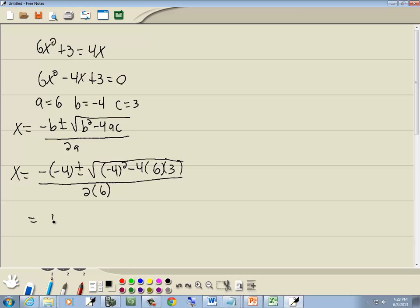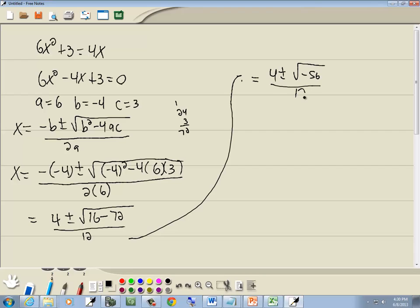Now negative negative gives me a positive 4. Plus or minus 4 squared, negative 4 squared is 16. Minus 4 times 6 is 24, times 3 gives us negative 72. And 2 times 6 gives us 12. So we've got 4 plus or minus negative 56 over 12.